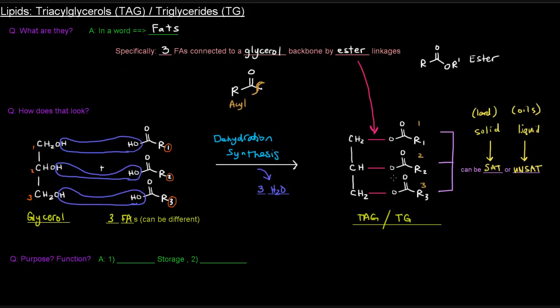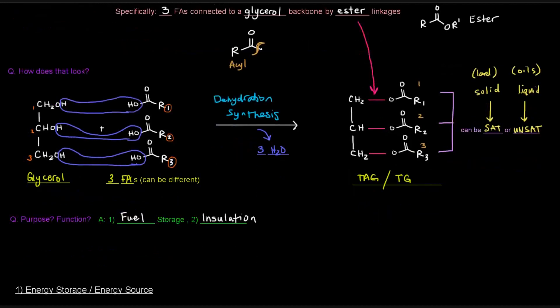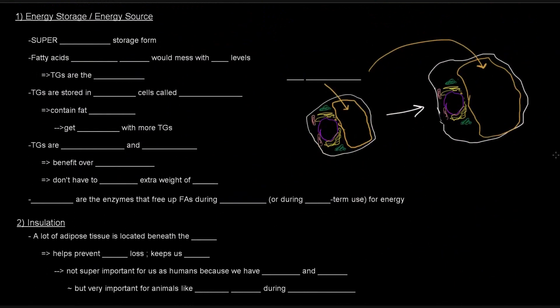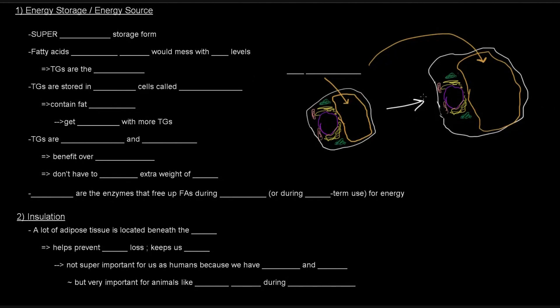Okay, so now that we know the structure of a triacylglyceride or triacylglycerol or triglyceride, what's their purpose? What's their function? Well, their main function that a lot of people are aware of is fuel storage. They store energy. And that should make sense because we've got these acyl groups coming from fatty acids. And fatty acids, we know, can be broken down for energy. So, if we think about energy storage or energy source...